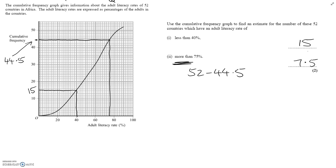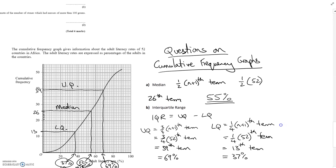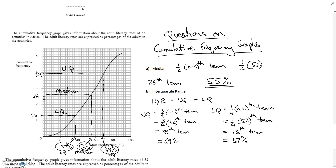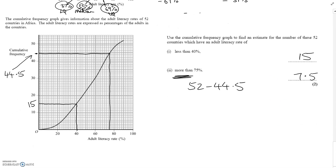That covers all the follow-up questions they ask. Median: halfway in, draw a line across then down. Interquartile range: three-quarters of the way in minus one quarter of the way in, then subtract. For the other question types, you start from the x-axis and draw lines up then across rather than across then down. Just be careful — when it's 'more than', you need this subtraction at the end.